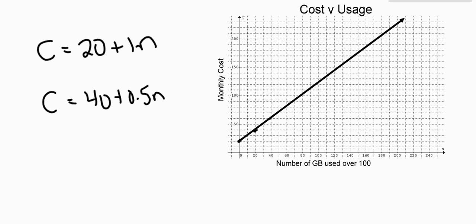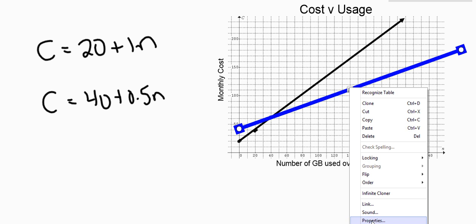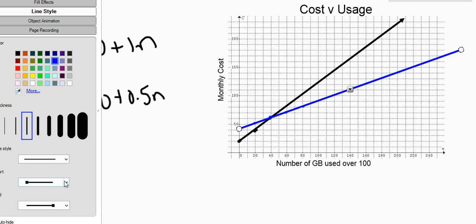So the other line, let me grab another color here. The other line starts at 40, and now it's only 50 cents for every extra gigabyte. So 20 extra gigabytes would only be 10 extra dollars. So every 20 gigabytes is another $10. So I can start to see where this line is going to be. Let me grab my line tool, draw a lovely line. This line is going to look weird at first, and then I'll fix it. So there it is. Let me fix that line for you.